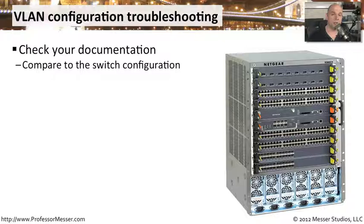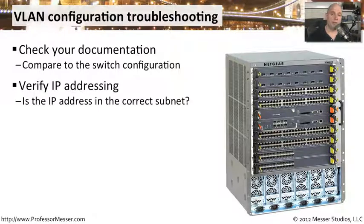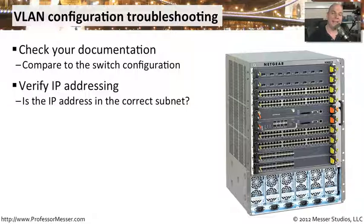Look at your switch configuration, see how it compares to your documentation, and make sure there's no mismatch. Maybe somebody changed some settings on the switch but did not update the documentation, so double-check that you're dealing with the right configuration on your switch. You also want to verify your IP address. If you're statically assigning IP addresses to devices, check the device and make sure you typed everything in correctly. If you have any mistakes — wrong network subnet, incorrect subnet mask, or improperly typed default gateway — you're going to have connectivity problems even if the VLAN is configured correctly inside your switch.